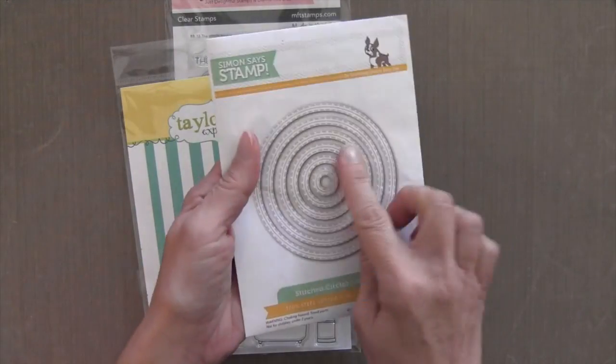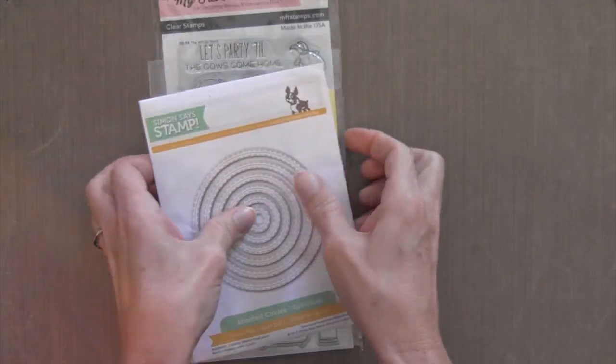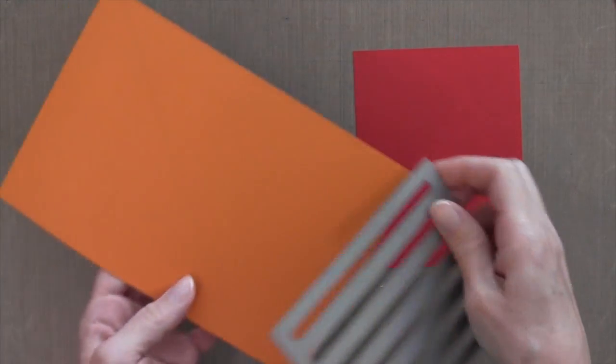And I'm going to cut it both ways and weave the paper. And then finally I have these stitch circles from Simon Says Stamp which have stitching on the inside and the outside.